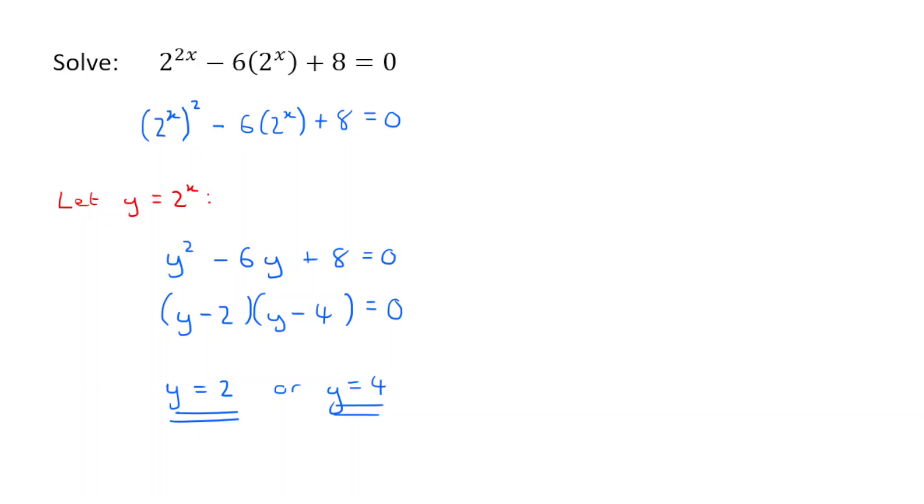But hang on. Earlier, we said that y is equal to 2 to the power of x. So what we can do is we can take each of these solutions now and apply that substitution. So instead of y is equal to 2, we have 2 to the x is equal to 2. And instead of y is equal to 4, we have 2 to the x is equal to 4.